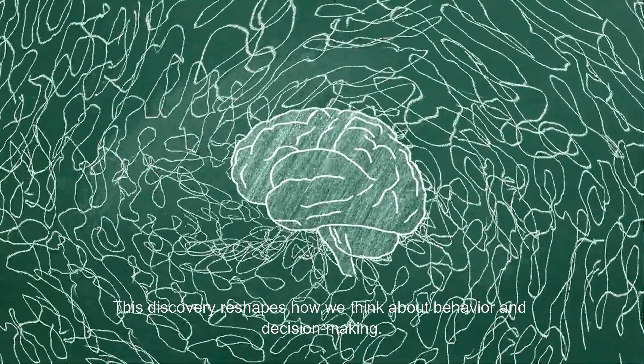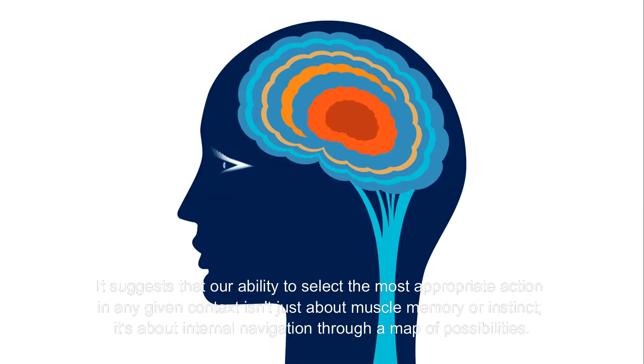This discovery reshapes how we think about behavior and decision-making. It suggests that our ability to select the most appropriate action in any given context isn't just about muscle memory or instinct—it's about internal navigation through a map of possibilities.